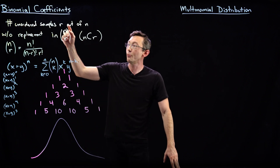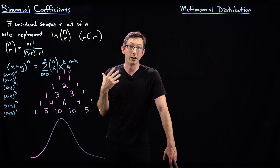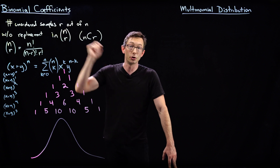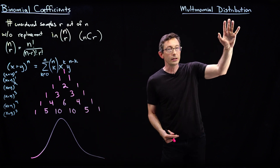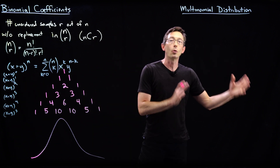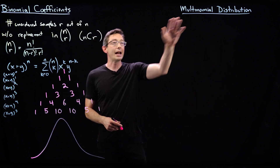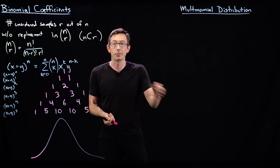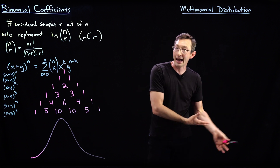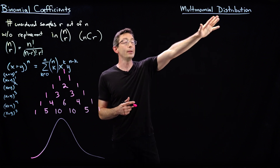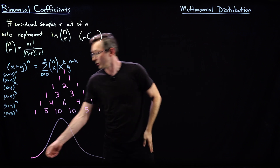Pascal's triangle is how you easily compute the coefficients of an expanded polynomial, but those coefficients are the binomial coefficients n choose k that come up all the time when computing probabilities. To calculate how many five-card poker hands can be drawn from a 52-card deck, it's just 52 choose 5 — really easy to compute. The multinomial distribution generalizes this to more complicated scenarios.